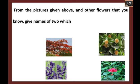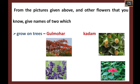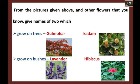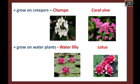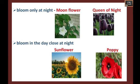Now find the names of other flowers you know. First, flowers which grow on trees: gulmohar and kadam. Flowers which grow on bushes: lavender and hibiscus. Flowers which grow on creepers: champa and coral vine. Flowers which grow on water plants: water lily and lotus. Next, flowers which bloom at night.